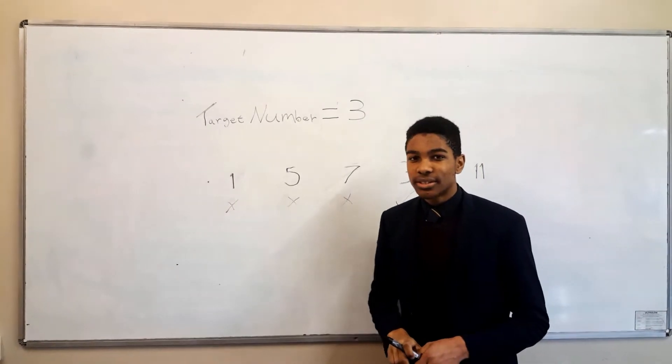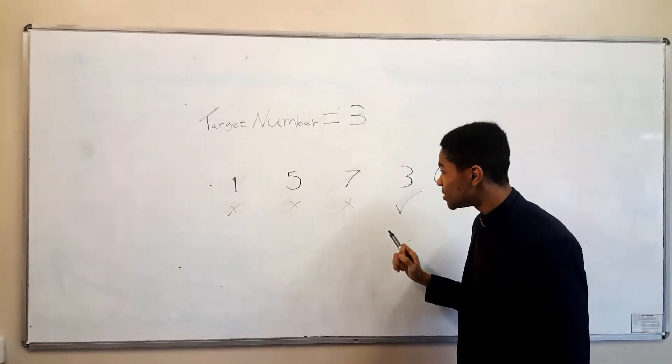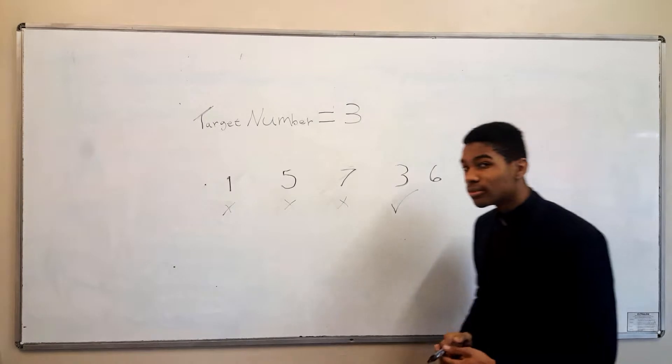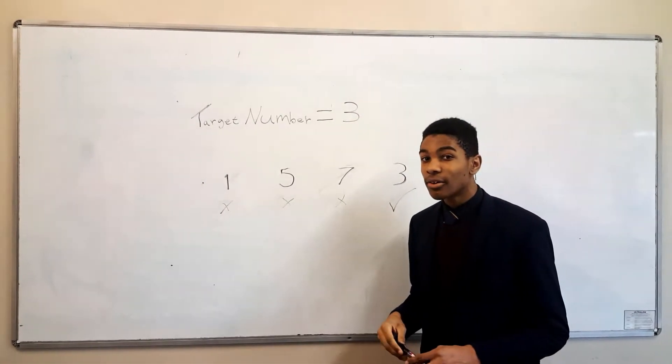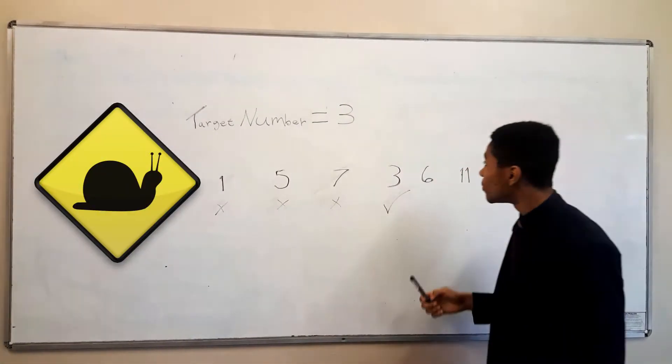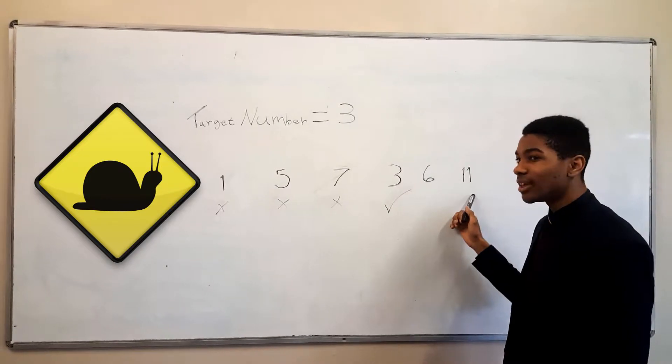Now, sequential search is good as it works with unsorted lists, as you can see here, and sorted lists. However, it can be incredibly time inefficient, for example, when the target number is at the end of the list.